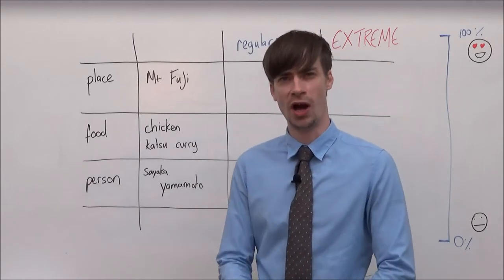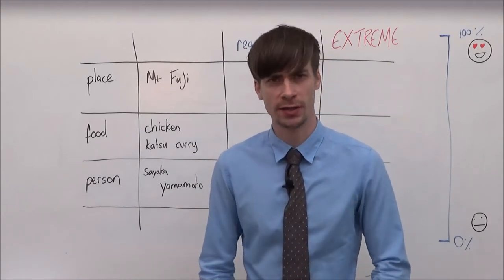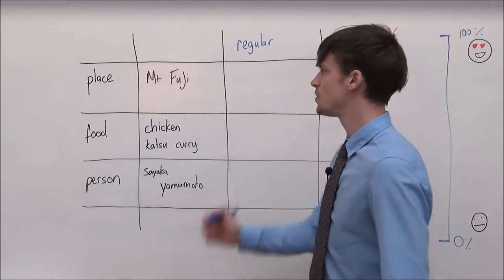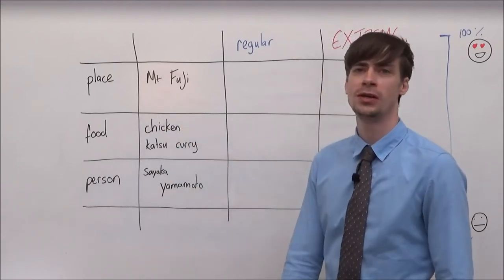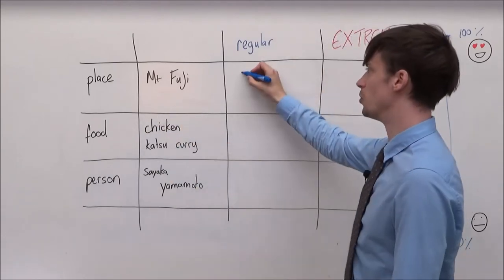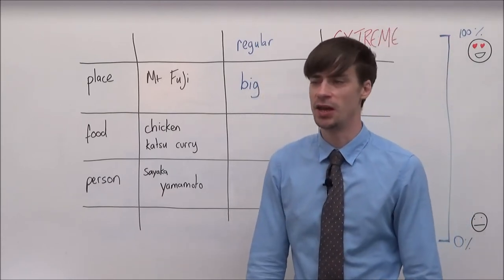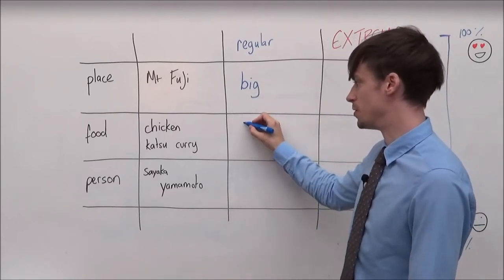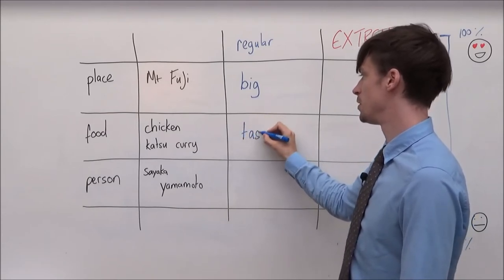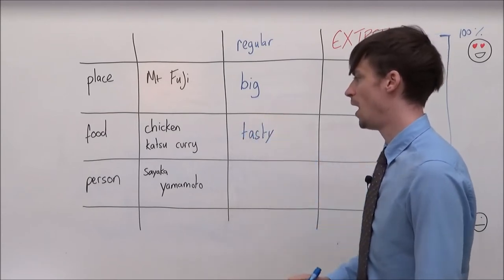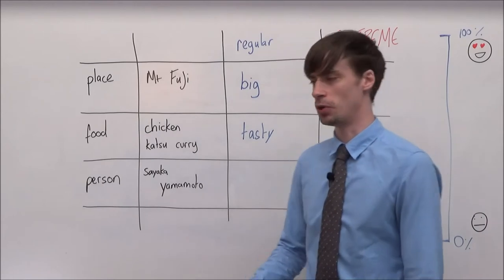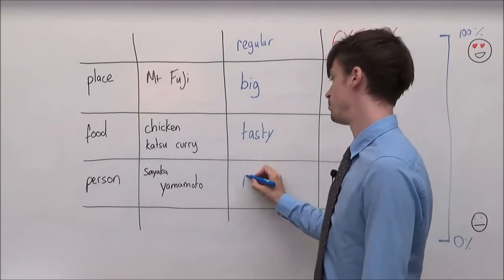Now let's talk about why. Why do you like these things? So Mount Fuji. I like Mount Fuji because it's big. I like chicken katsu curry because it's tasty. And I like Sayaka because she's pretty.